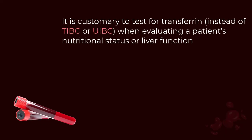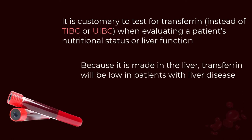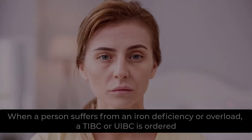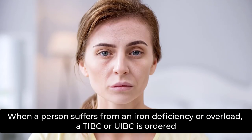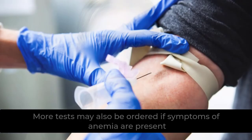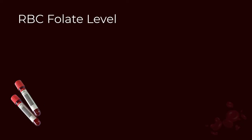When a patient has problems with the liver, transferrin levels will also likely be low. It is customary to test for transferrin instead of TIBC or UIBC when evaluating a patient's nutritional status or liver function, because transferrin is made in the liver. Transferrin levels also drop when there is not enough protein in the diet, so this test can monitor nutrition. When a person suffers from iron deficiency or overload, a TIBC or UIBC is ordered.